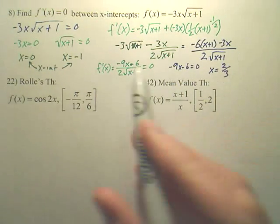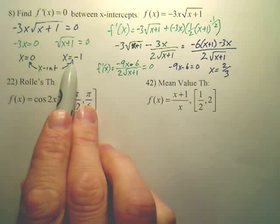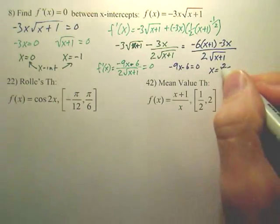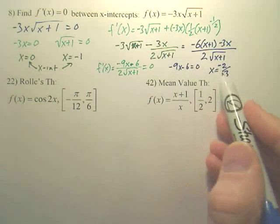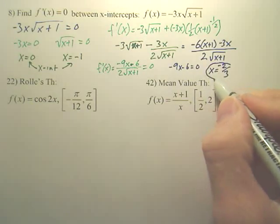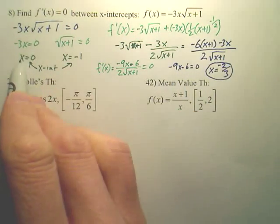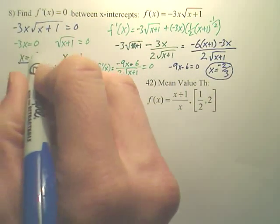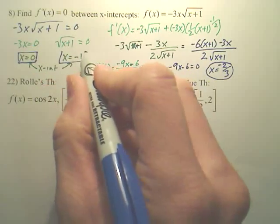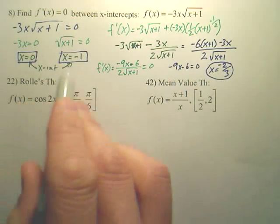you get x equals two-thirds. Is two-thirds in between these two points? Oh wait, negative two-thirds. Thank you. Because when you solve this, you get negative two-thirds. And is negative two-thirds between these two points right here? Negative two-thirds is between these two points.